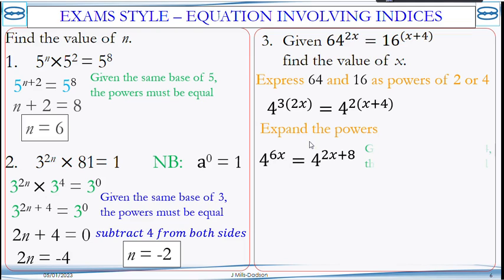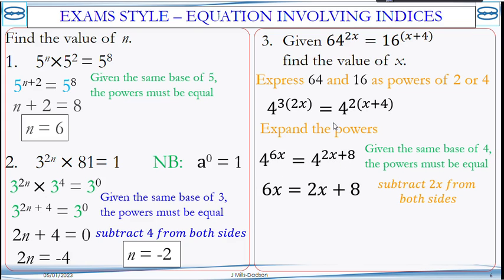So we expand the brackets by multiplying the powers. So this actually becomes 4 to the power of 6x equals 4 to the power of 2x plus 8. They have the same base, and therefore the powers must be equal. So you equate them and solve the equation. Subtracting 2x from both sides and dividing by 4, x is equal to 2. Thank you.